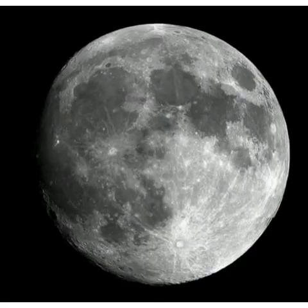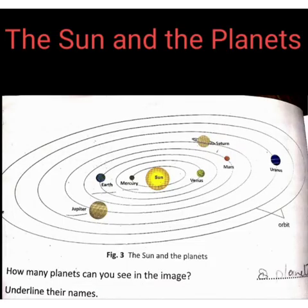On a clear night you must have seen the moon and millions of stars along with a few planets. The question is: how can we differentiate between stars and planets? It is very easy — stars twinkle when seen from the earth, but planets do not twinkle.